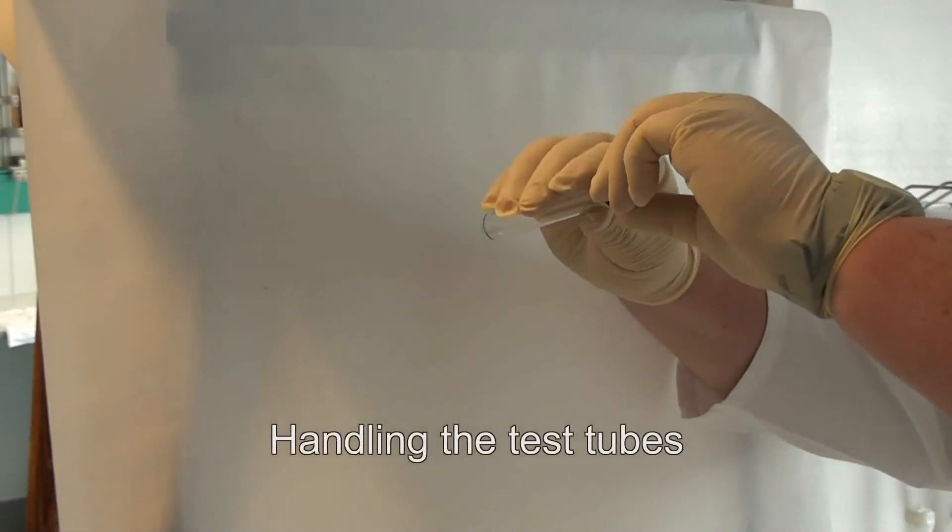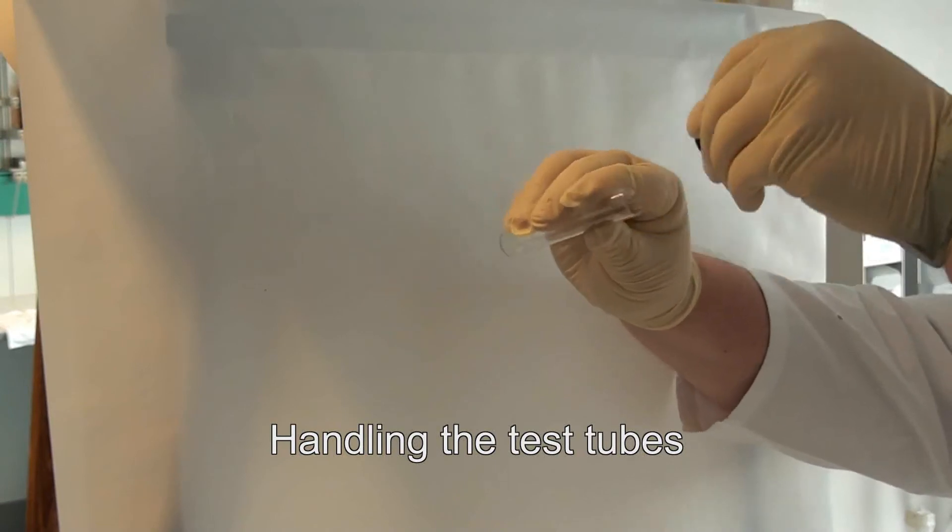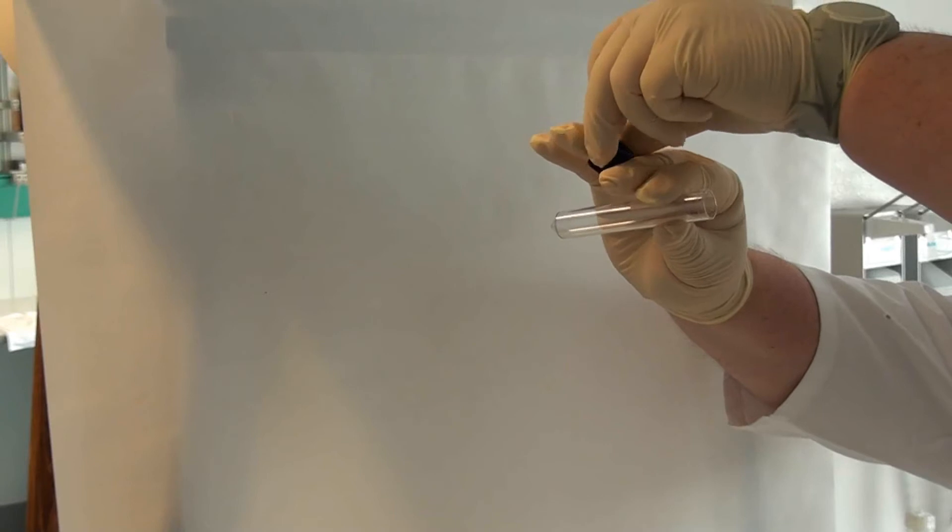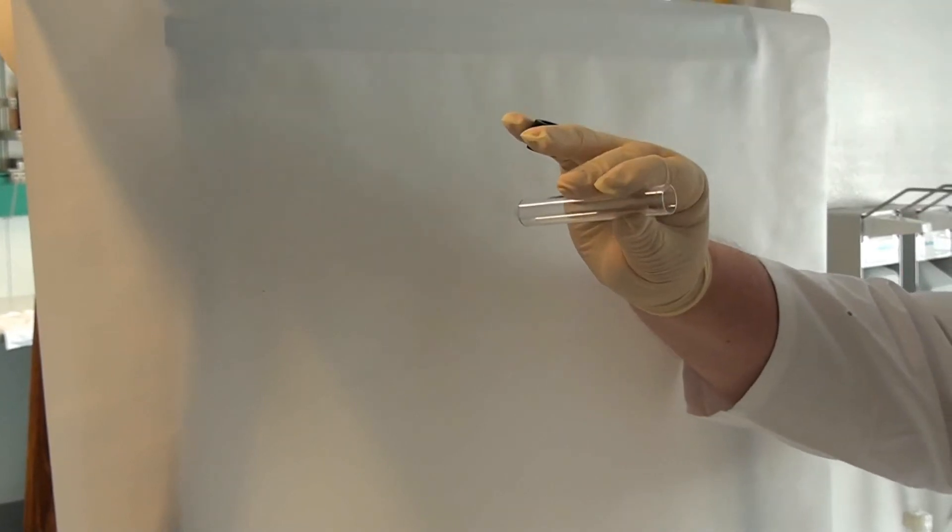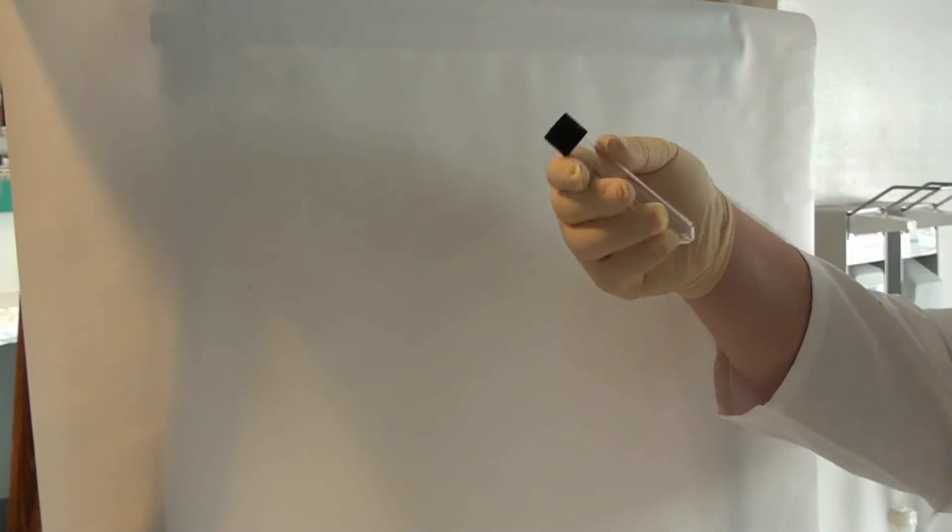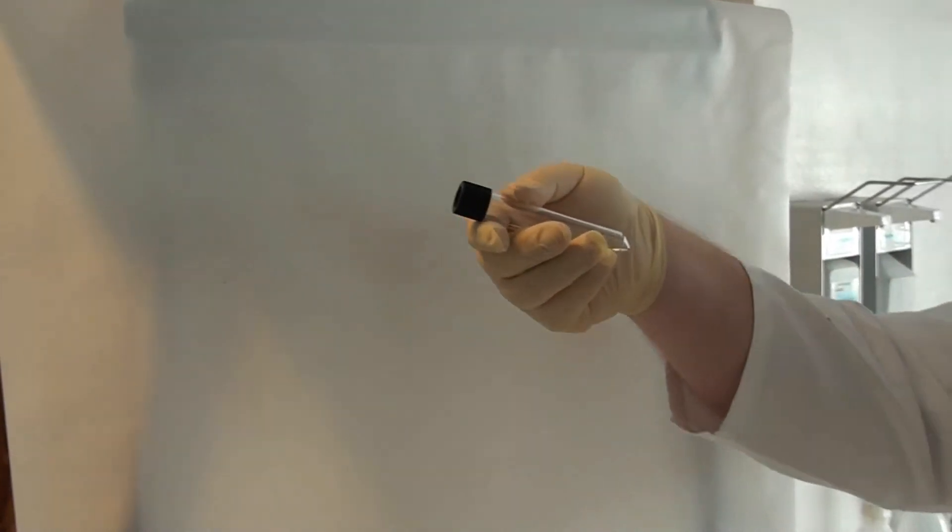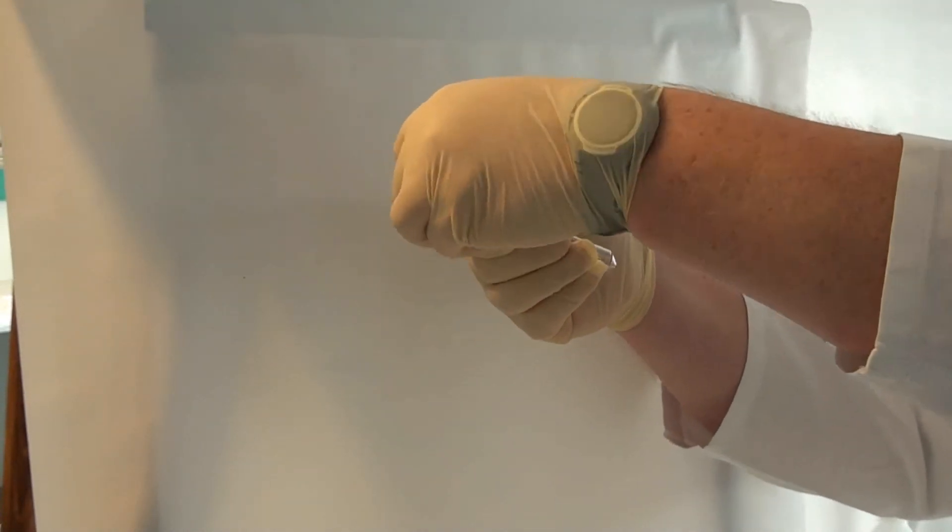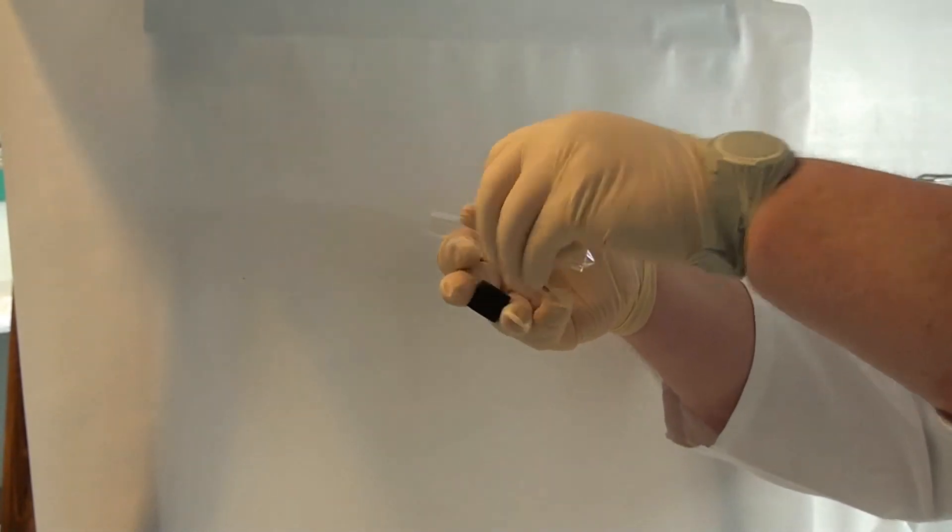Sterile test tubes have to be handled with care. As dirt may trickle from the udder, tubes should be kept in a horizontal position most of the time, and the plug should be protected with your hand either like this, or like that, having the plug pointing downwards.